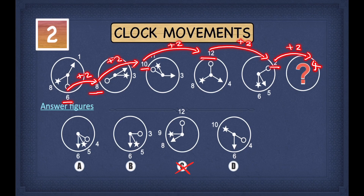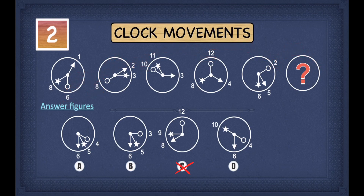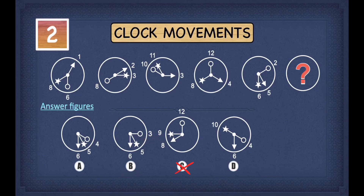So if we find an option where the circle does not point towards 4, we cross it off. In A, the circle points towards 4. In B, it points towards 3, so we cross B out. In D, the circle points towards 4, so both A and D remain.